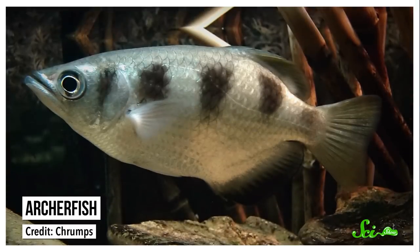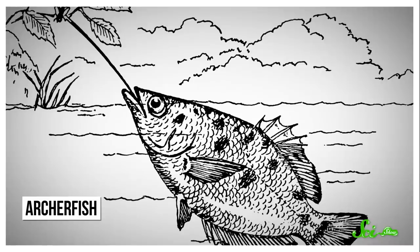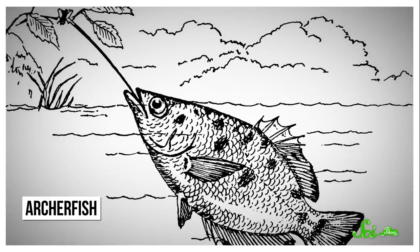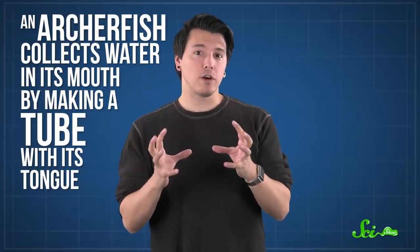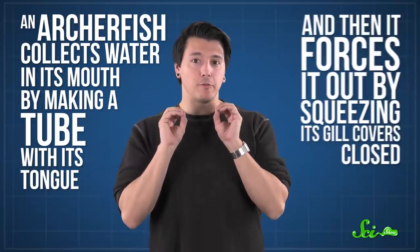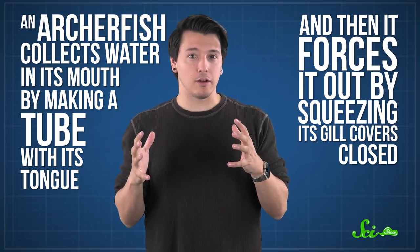Take the archerfish, which gets its name from the stealthy way it hunts. It knocks down insects by spitting out a powerful jet of water, and then gobbles its prey up. First, an archerfish collects water in its mouth by making a tube with its tongue, and then it forces it out by squeezing its gill covers closed.